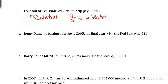Johnny's batting average in 2005, his final year with the Red Sox was 0.3316. And this is a decimal. And so that means it's relative. So you're not counting how many you're,